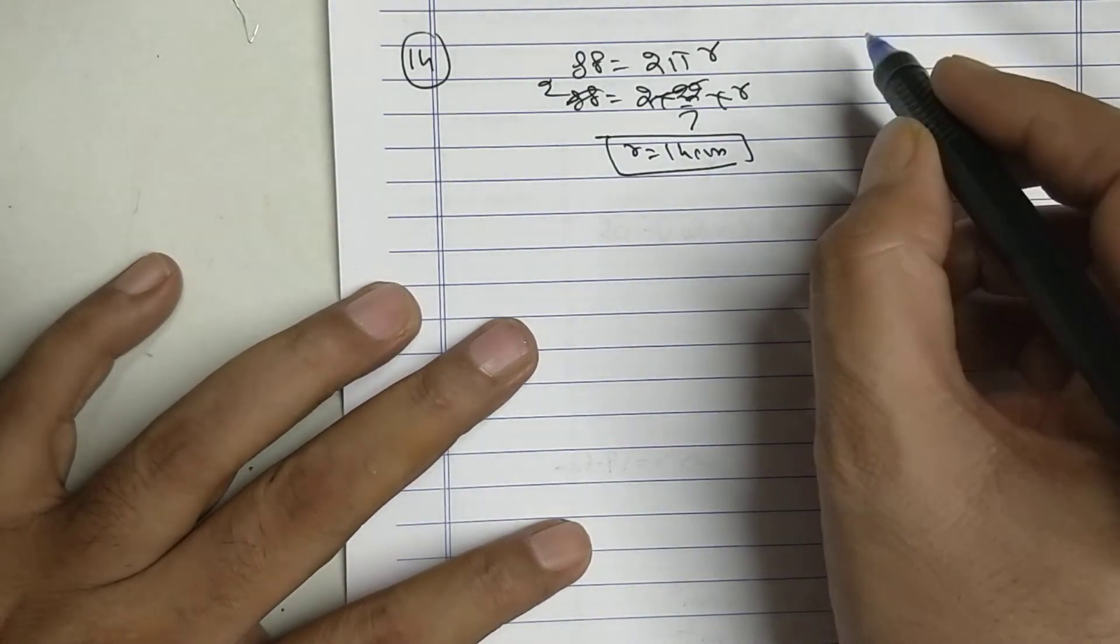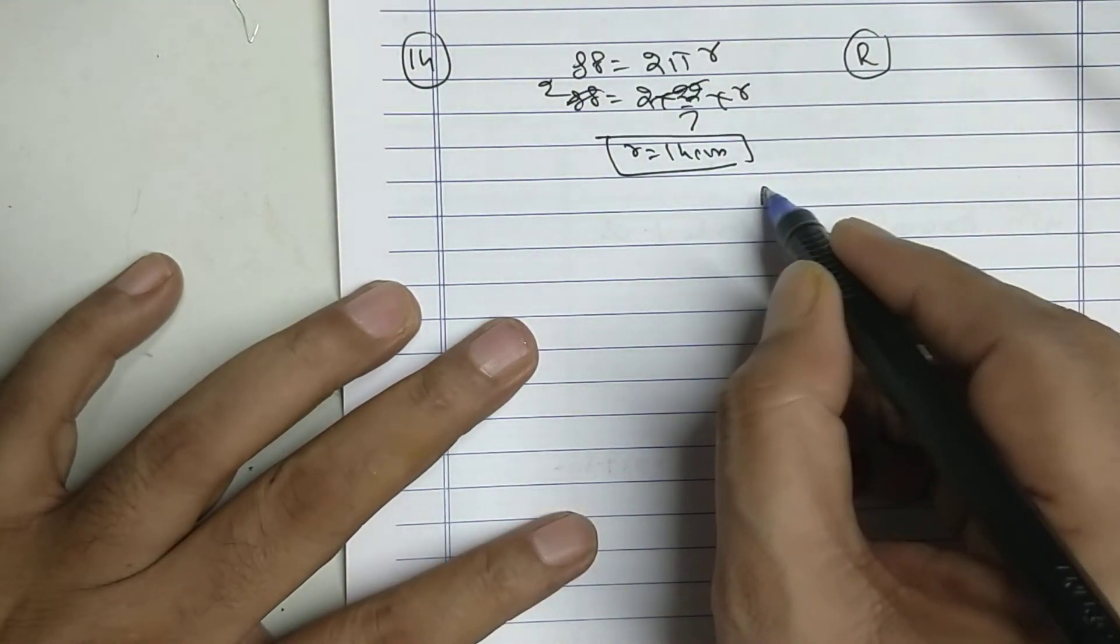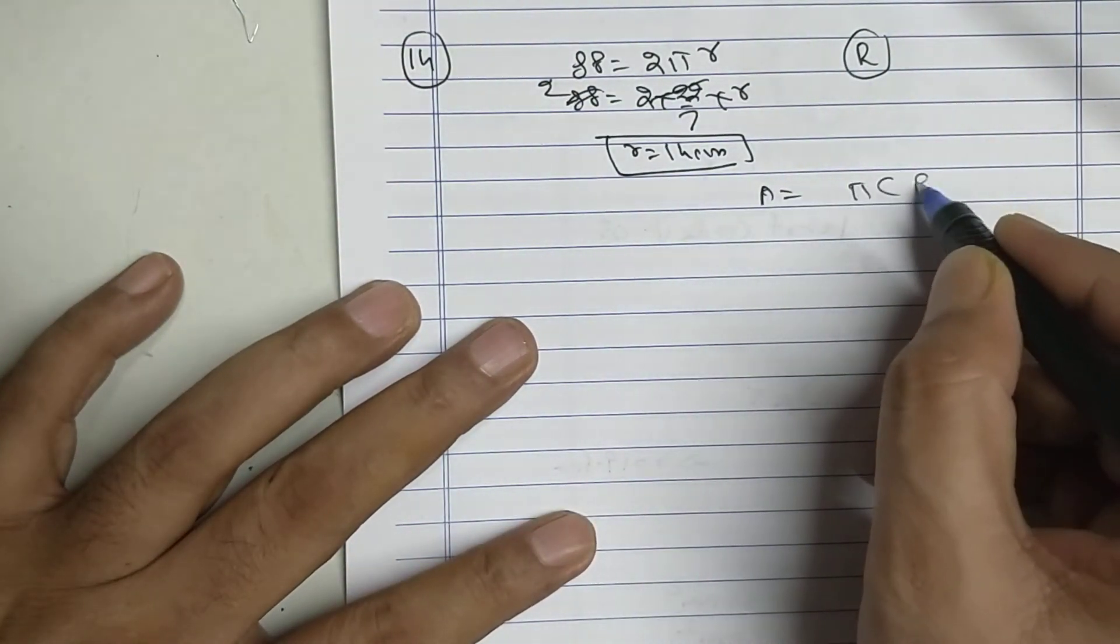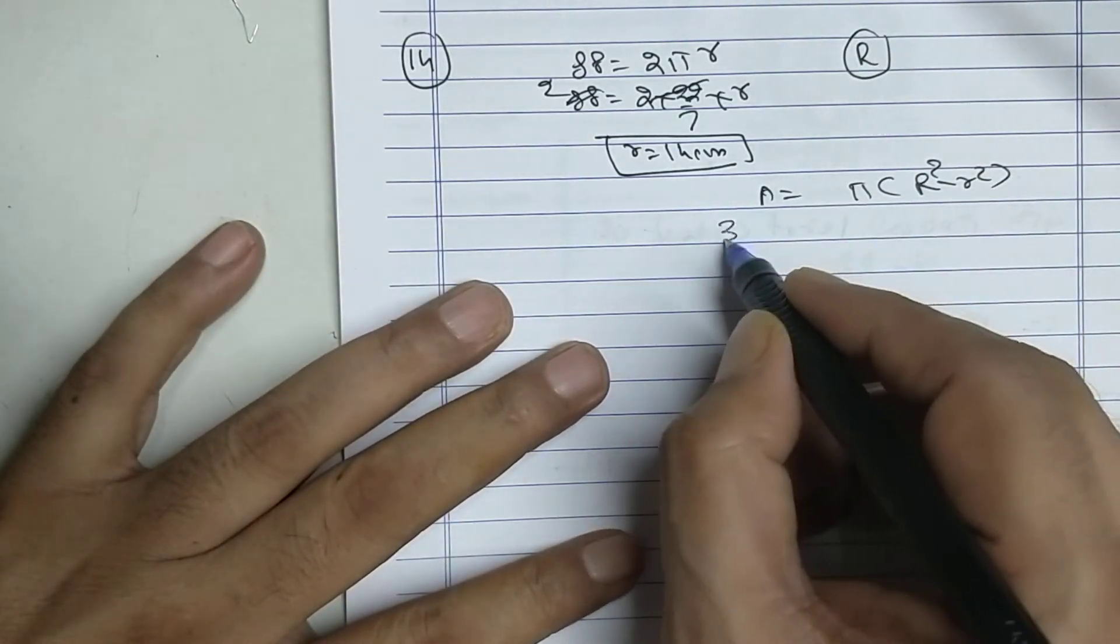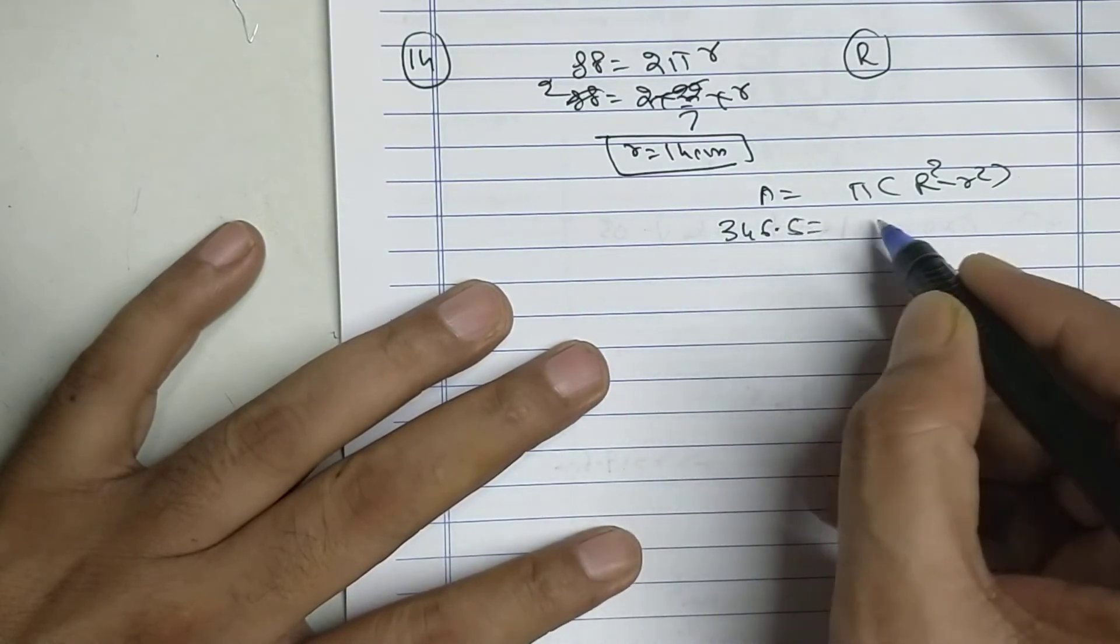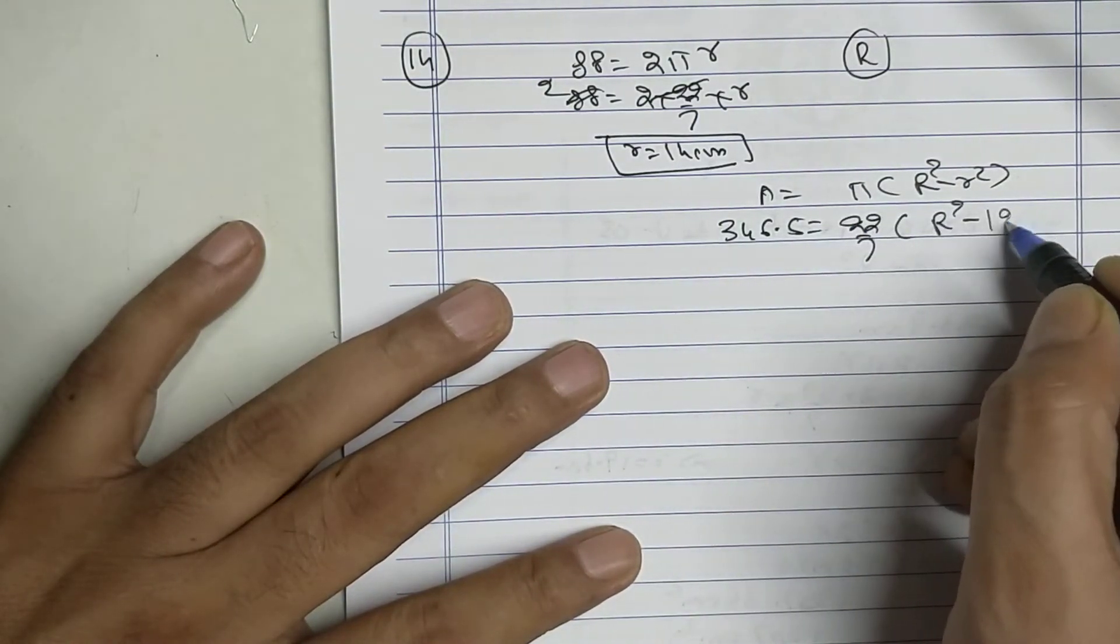Find the outer radius. Apply the formula: π(R² - r²). 346.5, 22 upon 7, R² minus 196.